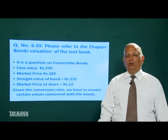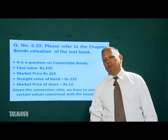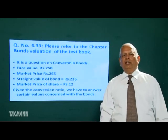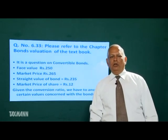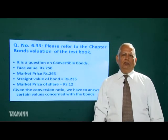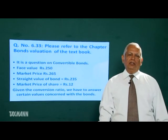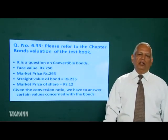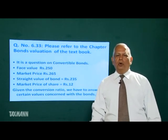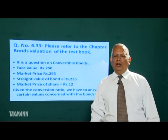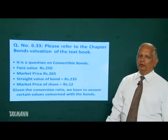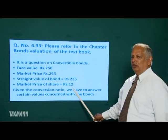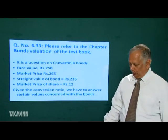First, we need to find the stock value of the bond — that is, the current market price of the equity shares to be obtained on conversion of the bond. The conversion ratio is 20, meaning each bond can be converted into 20 equity shares. Current market price is Rs. 12 per share, so stock value of the bond is 20 × Rs. 12 = Rs. 240.